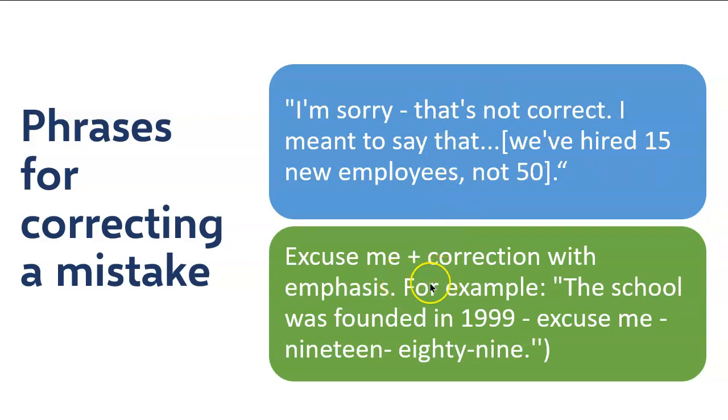Second one, excuse me, plus correction with emphasis. For example, the school was founded in 1999. Excuse me, 1989. Right? You committed a mistake. You put emphasis on 1989 because by mistake you said 1999. So your emphasis was on 1989. So these are some of the phrases for correcting a mistake.